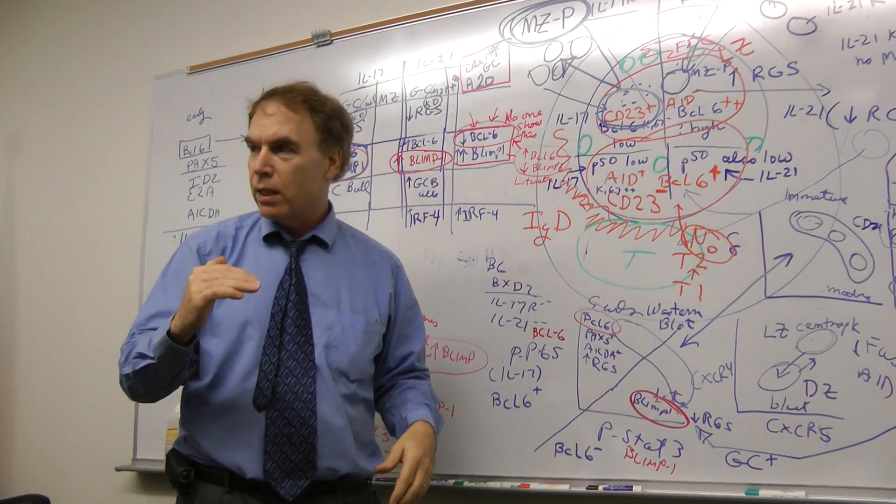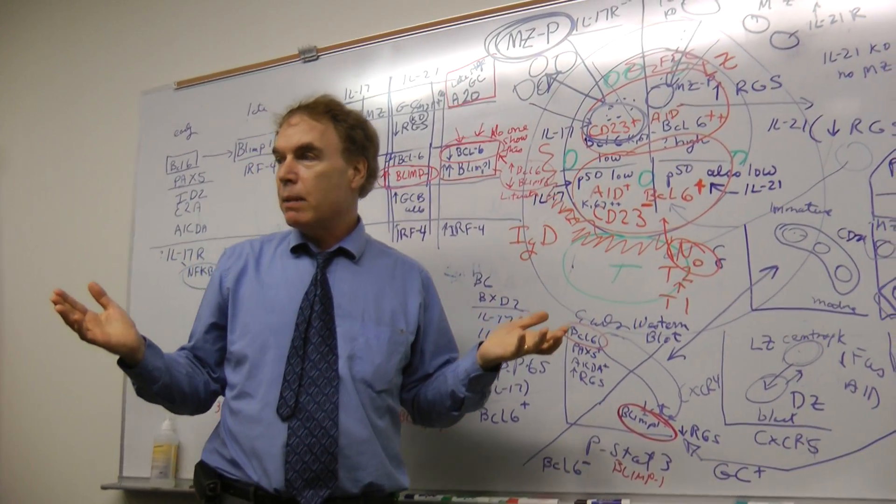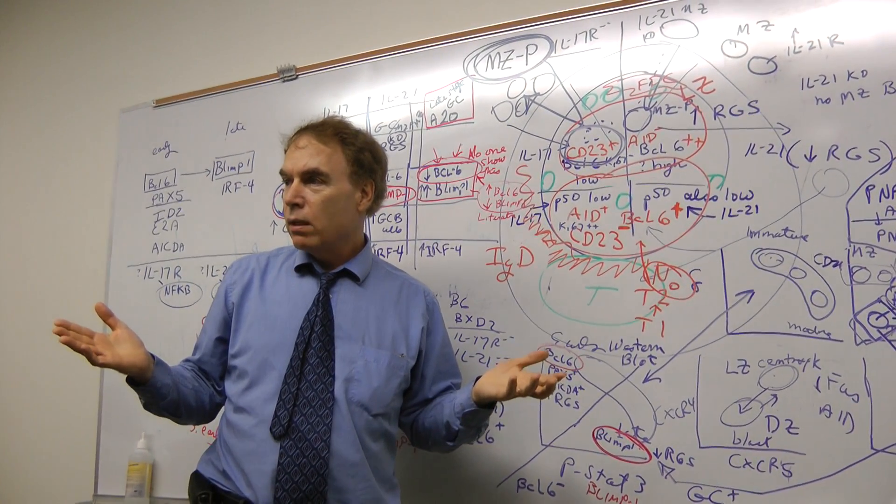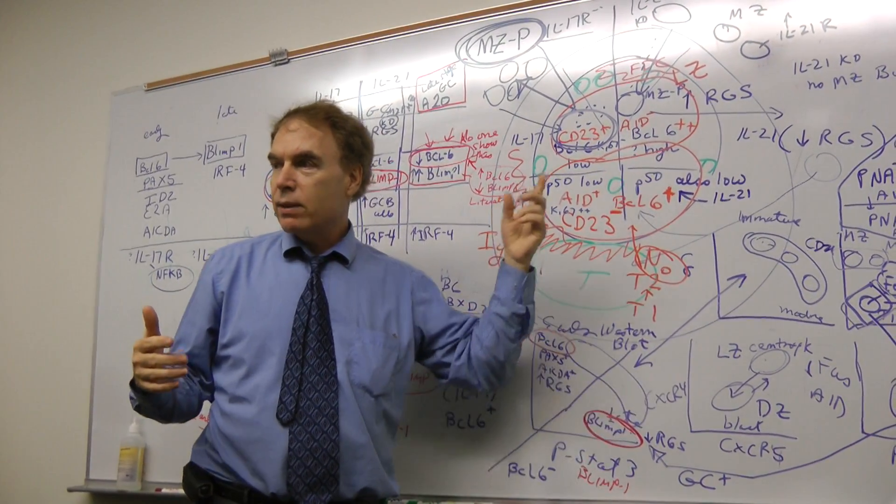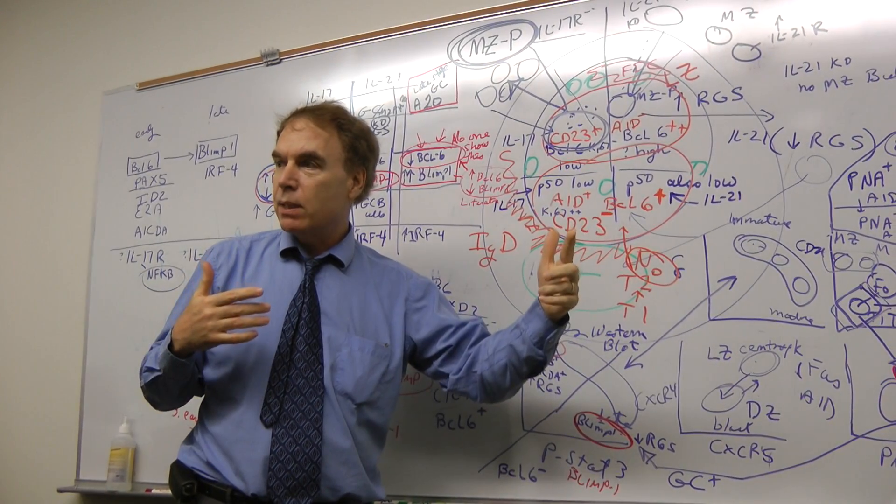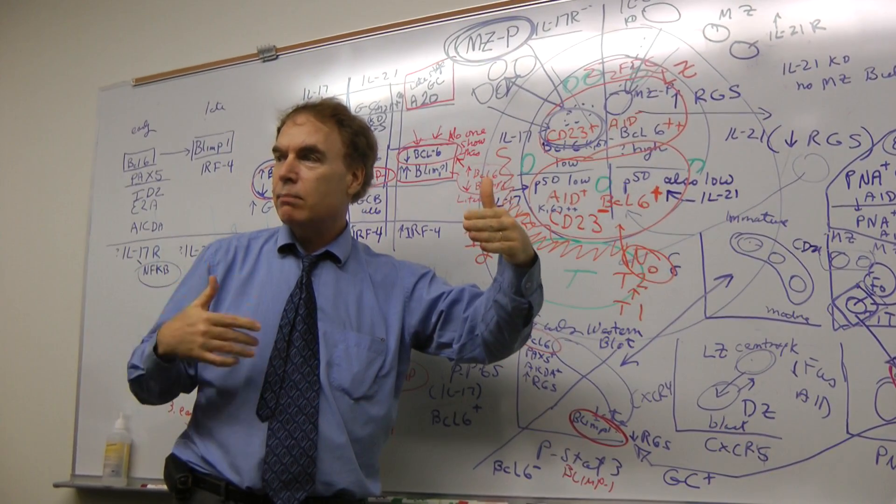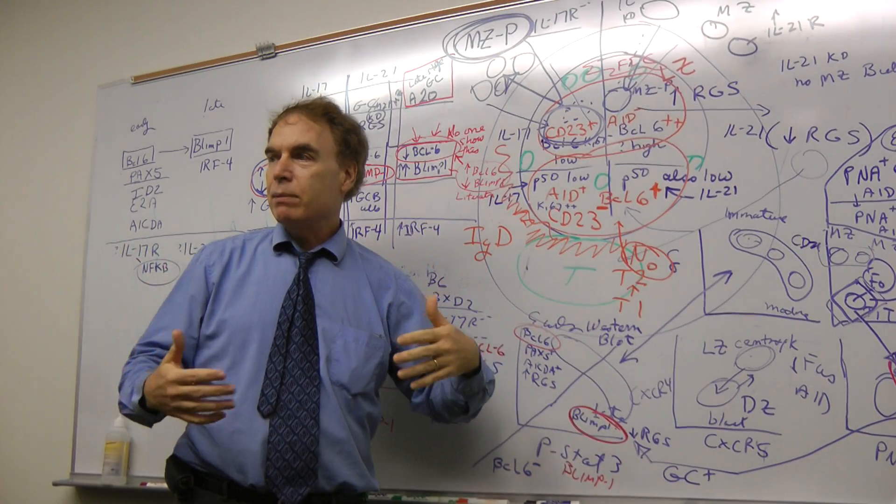So there's three switch factors. I mean, I would predict it might be BCL-6. But we'd have to show that. Like IL-17, I forget, maybe downregulation of BCL-6. So absent BCL-6 and BLIMP-1. I don't like the absence part.